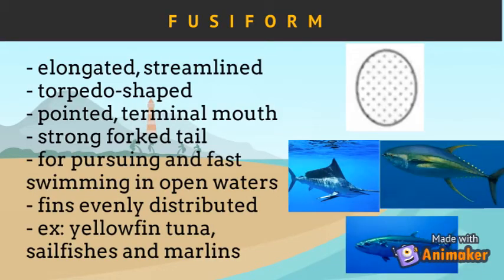The first type of body form is fusiform. Fusiform is found in fish with an elongated, streamlined, and torpedo-shaped body. It is paired with a pointed head ending in a terminal mouth and a strongly forked tail. The fins are usually evenly distributed for stability and maneuverability. This is adaptive for pursuing prey and fast swimming in open waters. Fish with this body shape include tunas, sailfishes, and marlins.